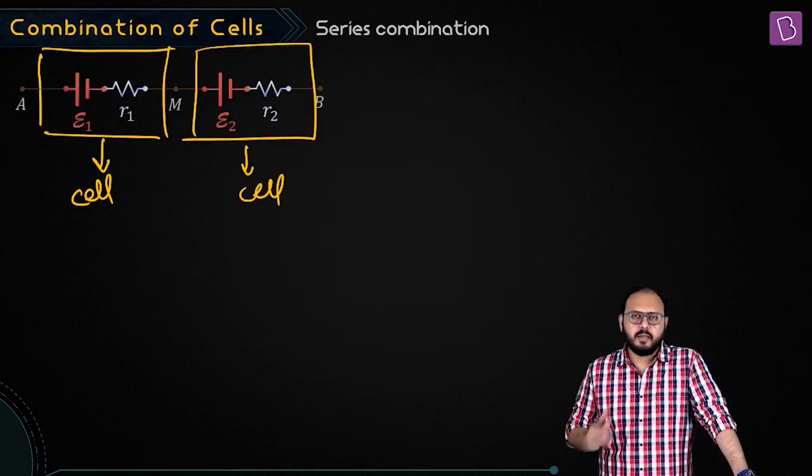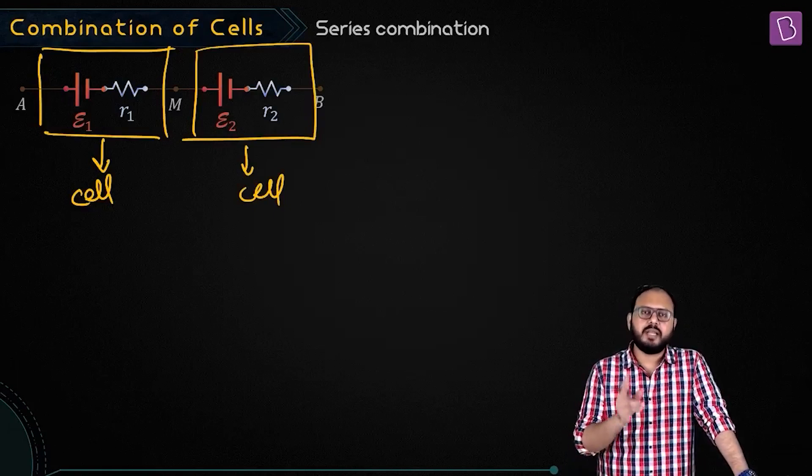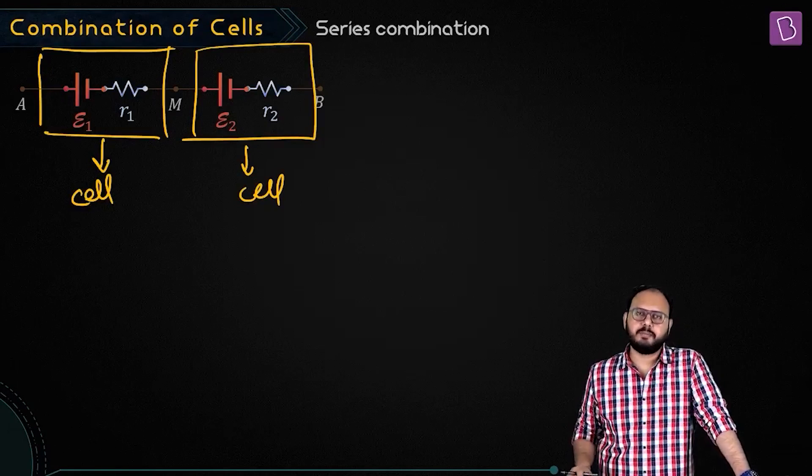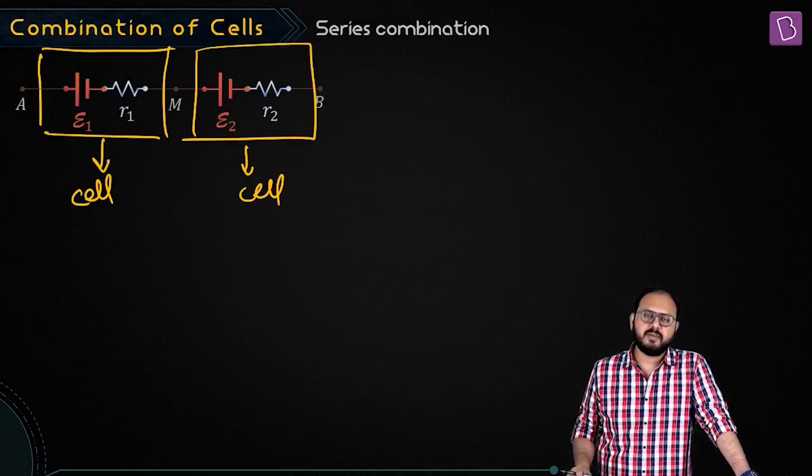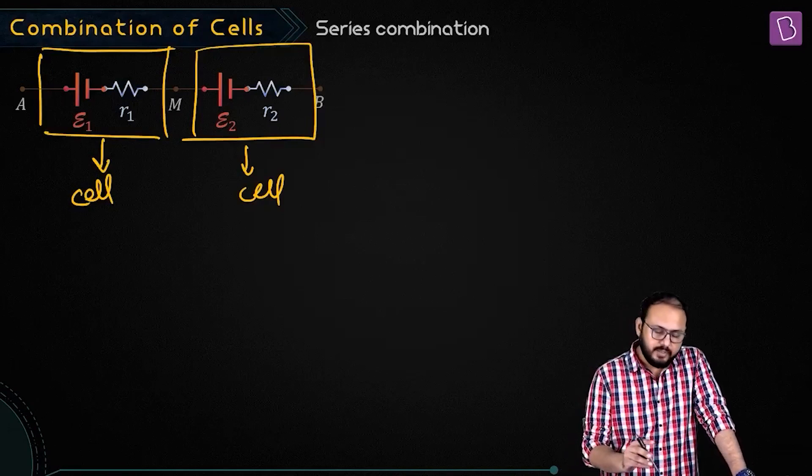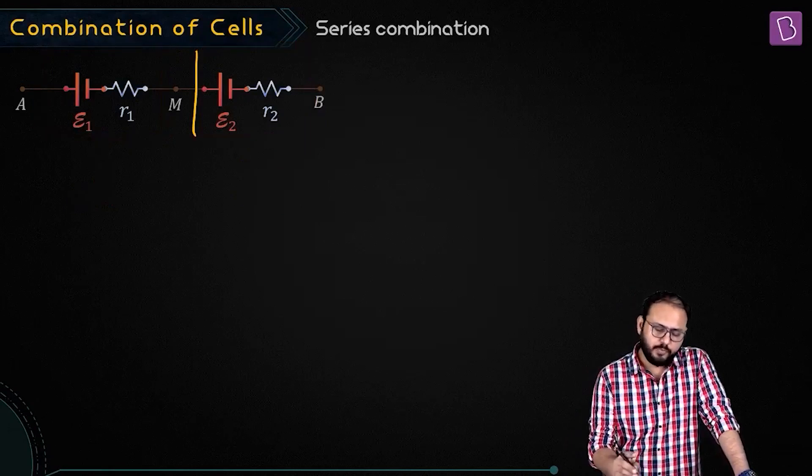What does one cell contain? One cell contains one battery of EMF E and one internal resistance small r. Since I had to differentiate between the two, the EMFs are E1 and E2, and the resistors are r1 and r2. By the way, once you connect them you can remove the boxes, no problem.